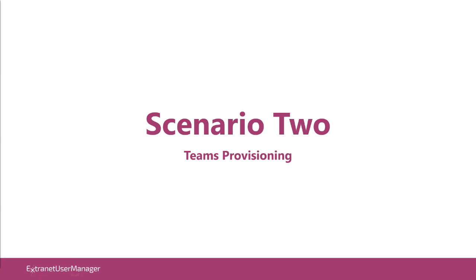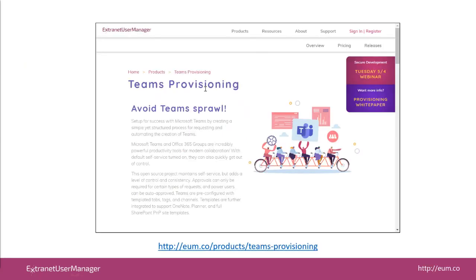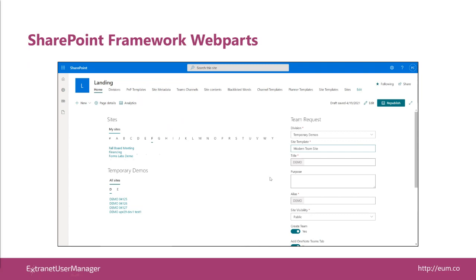Let's switch gears and talk about teams provisioning. If you're not familiar with our teams provisioning solution, it's open source, published on GitHub — we're just getting a new version ready to publish. It's really around providing a self-service framework for requesting Teams and team sites and all the supporting components. There are a number of pieces deployed as part of this solution. There are a couple of SharePoint Framework web parts: the actual team request form, which is very dynamic — you can customize the fields that show up just by doing changes to content types in SharePoint, without cracking the code open. And then A-to-Z web parts for quick navigation to SharePoint team sites, Teams, and other resources.